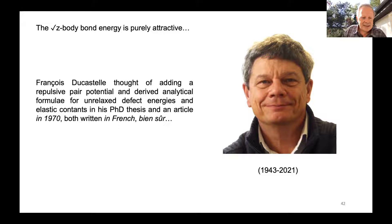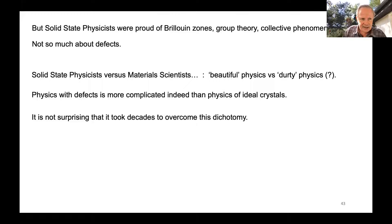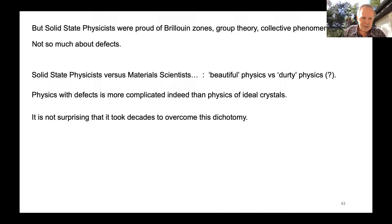Ducastel simply thought of adding a repulsive potential and derived analytical formulae for unrelaxed defect energies, elastic constants, and cohesive energies in his PhD thesis and a paper published in Journal de Physique in 1970. Both were written in French, so the work had to be rediscovered later. Another dichotomy was between solid-state physicists — proud of Brillouin zones, group theory, and collective phenomena — and materials scientists interested in real defects. In France and elsewhere, this was the dichotomy between 'beautiful' physics and 'dirty' physics; physics with defects is more complicated than physics of ideal crystals. It took decades to overcome this philosophical dichotomy.